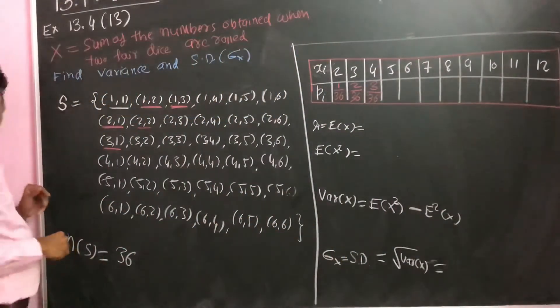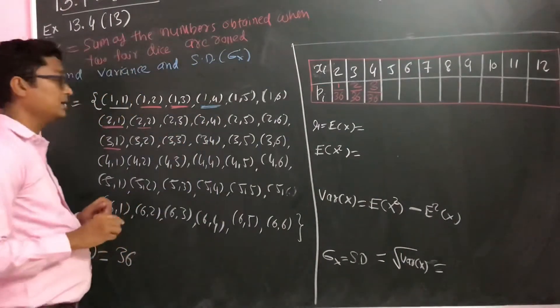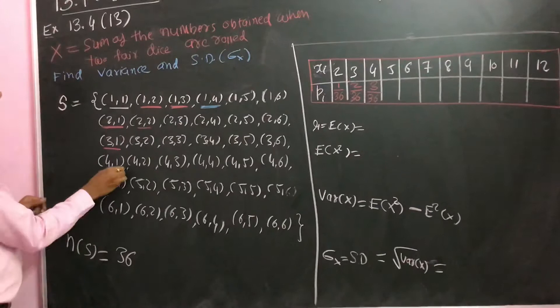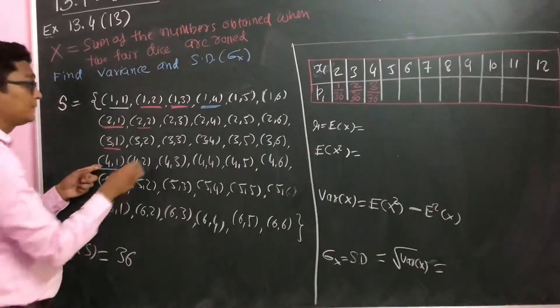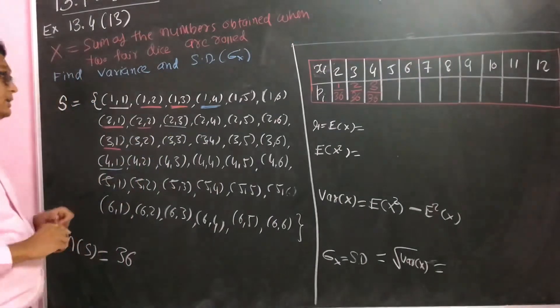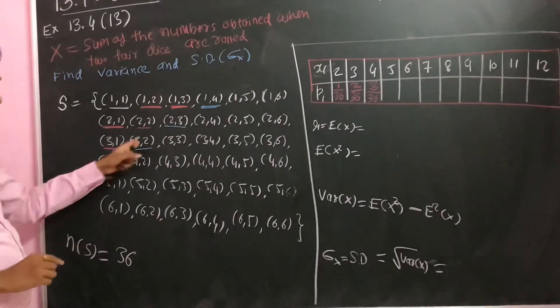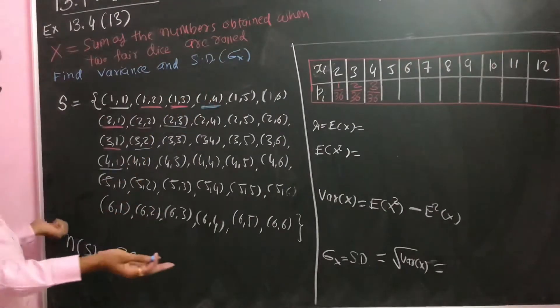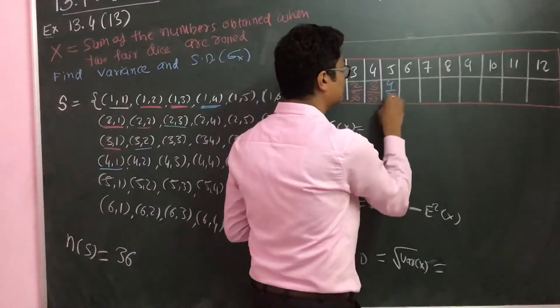For 5, we have 4 plus 1, so 4-1, 1-4, 2-3, and 3-2. That's 1, 2, 3, and 4 combinations. So 4 upon 36.